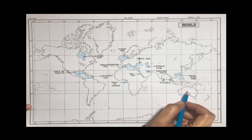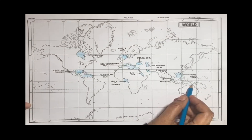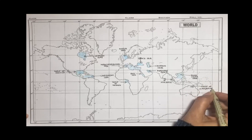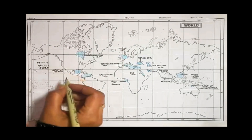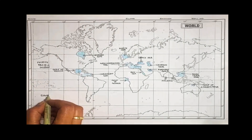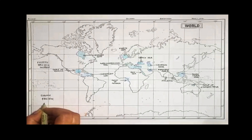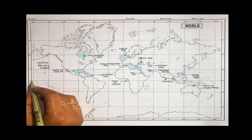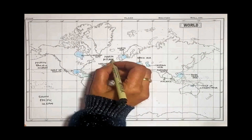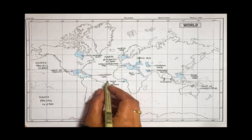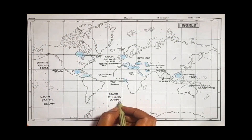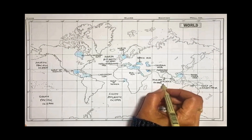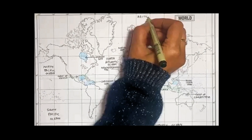This is your continent Australia. You can see this depression — this will become your Gulf of Carpentaria. Above equator is North Pacific Ocean; below equator will be your South Pacific Ocean. In the same way, above equator is your North Atlantic Ocean, and below zero degree will be your South Atlantic Ocean. Towards south, you will write down Southern Ocean. Below India is your Indian Ocean, and then above is Arctic Ocean.